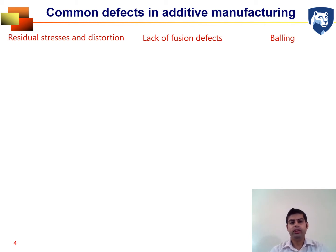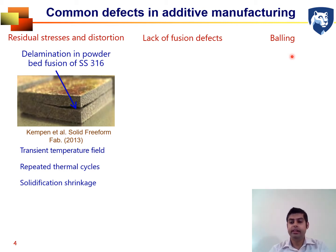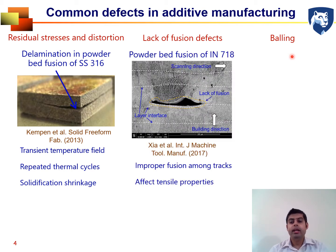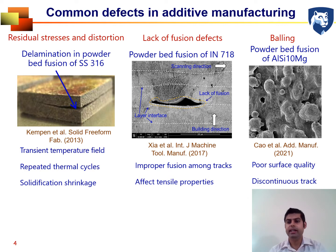I am going to talk about three common defects in additive manufacturing: residual stress and distortion, lack of fusion, and balling. In the AM process, temperature varies significantly, and the transient and spatial variation of the temperature field results in accumulation of residual stress and distortion, which may lead to delamination and cracking. Improper fusion between neighboring tracks causes lack of fusion defects that affect tensile properties. Balling affects surface quality and track continuity, and often requires the part to be rejected.